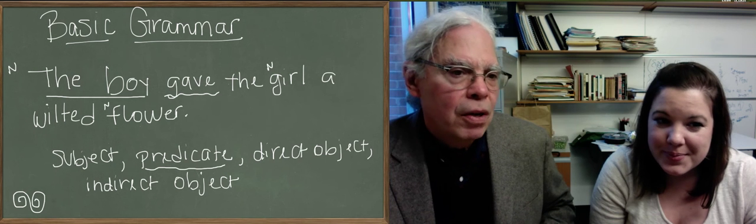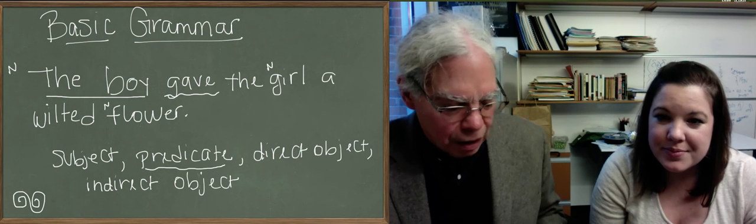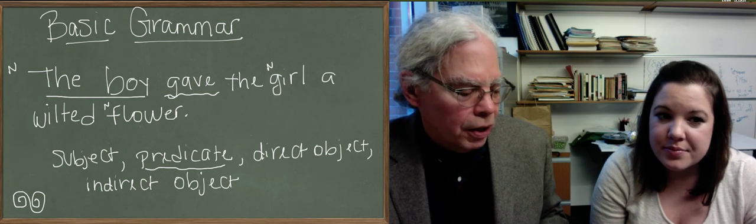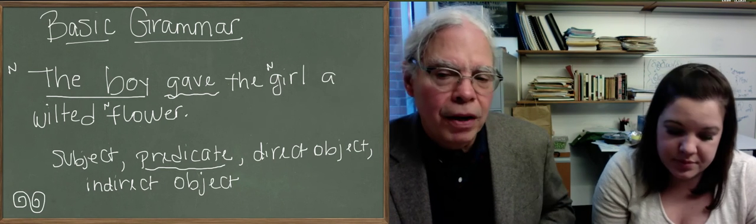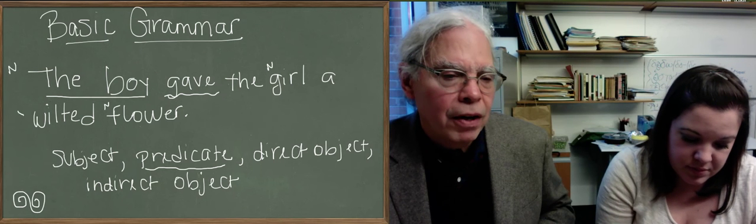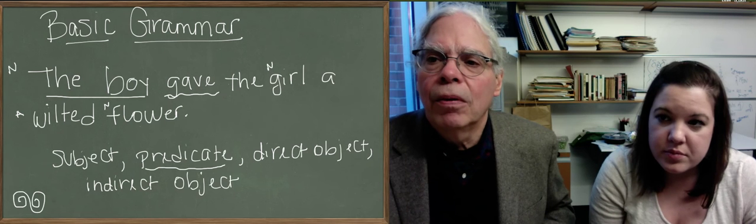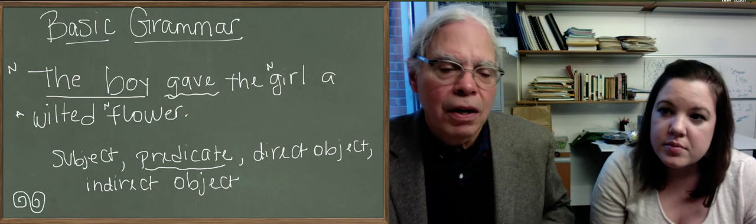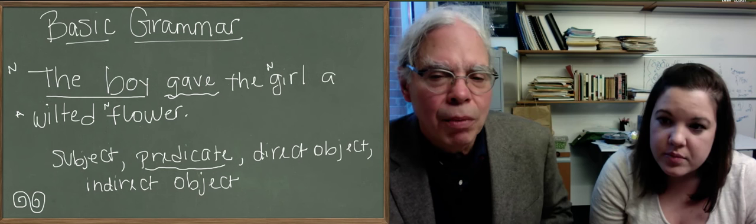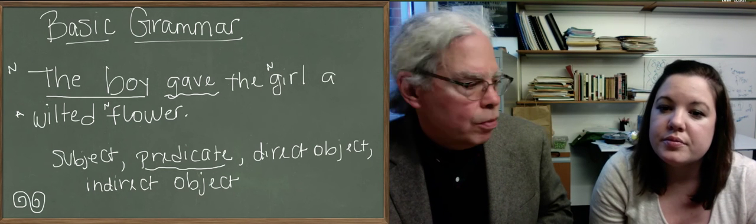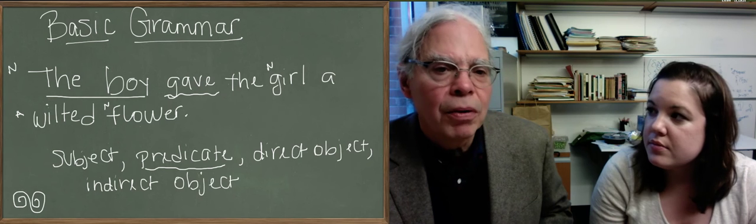What part of speech is wilted? We've got nouns and verbs, and wilted is yet another category called an adjective, which is a modifier, a so-called modifier of a noun. It's something to define it in a particular way. That's what we mean when we say a modifier, that restricts or defines what the noun is, which noun we're talking about.